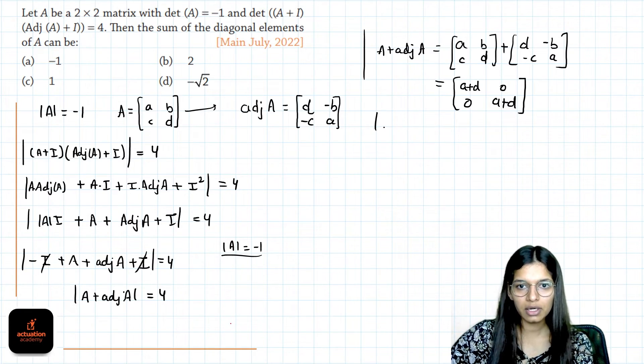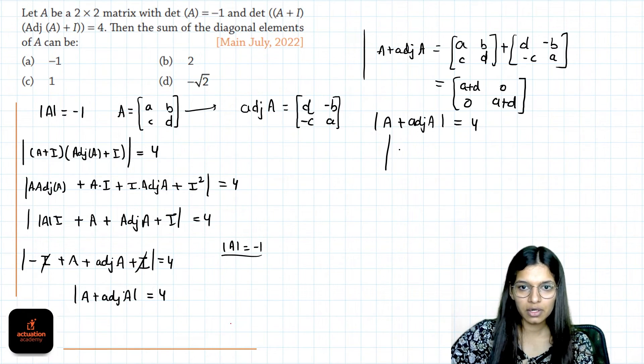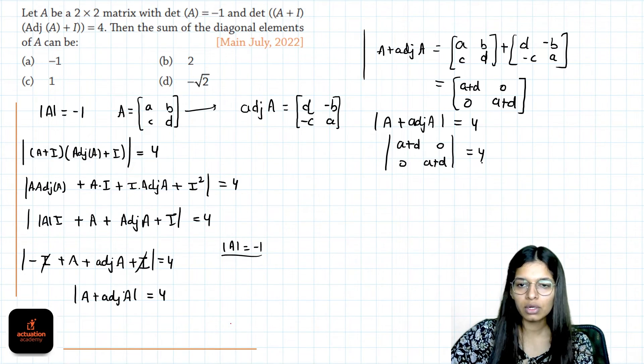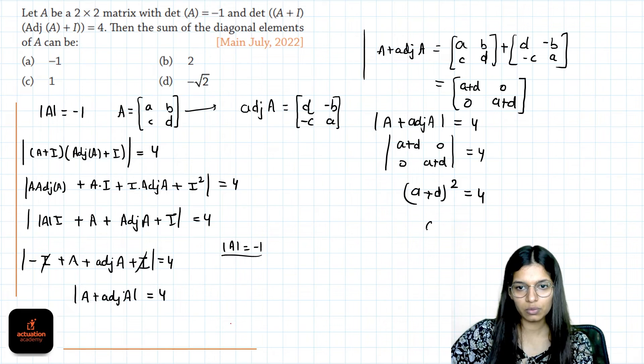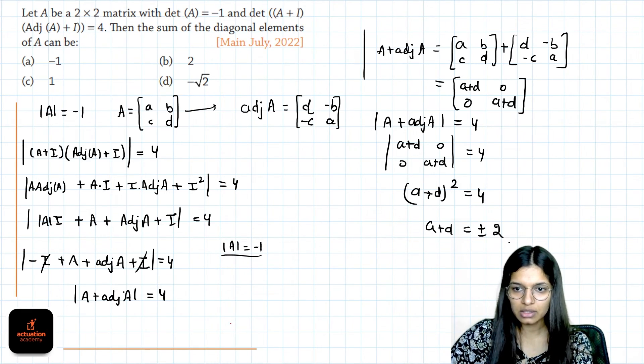Now determinant of A plus adjoint of A is given as 4. So determinant of this matrix a plus d, 0, 0, a plus d will be 4. If we calculate the determinant, it will be a plus d square is 4. And if we remove the square, taking square root both sides, it will be plus minus 2.